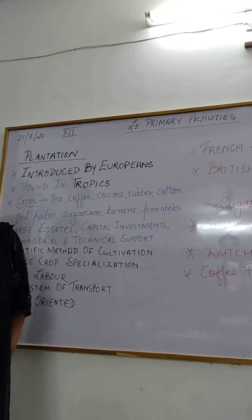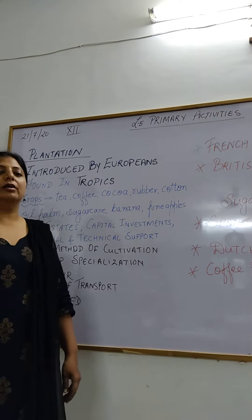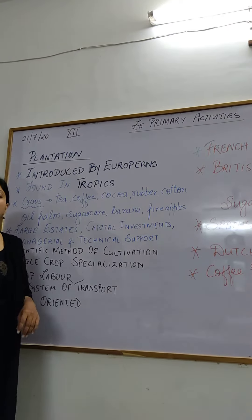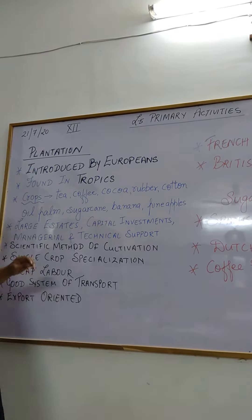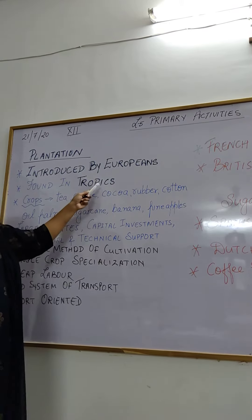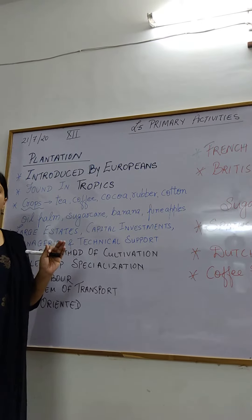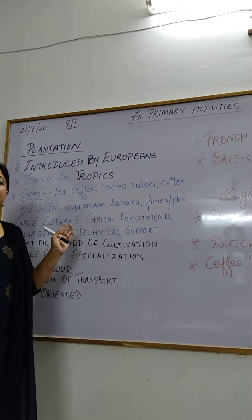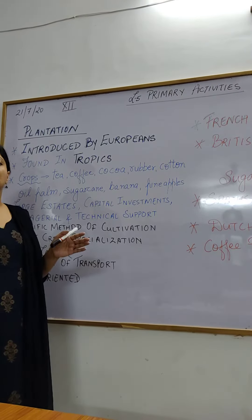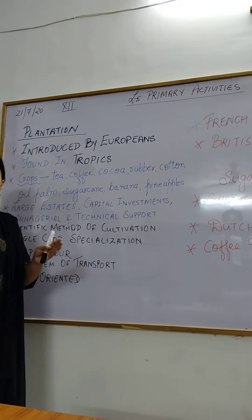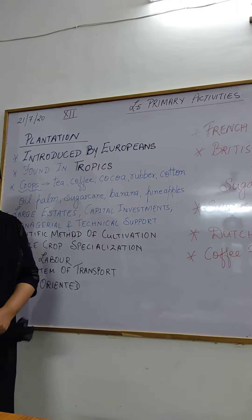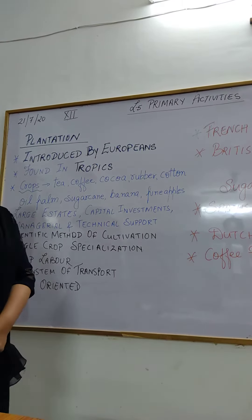Good morning students. Today we will be beginning with a new topic of lesson number 5 - primary activities, that is plantation. Plantations were actually introduced by the Europeans in the tropics. Tropics are the colonies which were created by the British or the European countries under them. The colonies were actually the countries which became slaves to the Europeans.